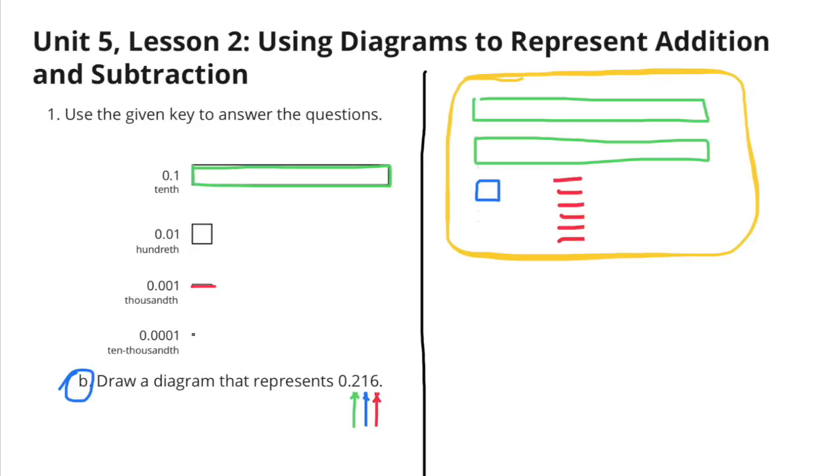B. Draw a diagram that represents 216 thousandths. I've drawn two of the longer shapes that represent 1 tenths each, so that would be 2 tenths. I've drawn one of the square shapes that represents 1 hundredths, and I've drawn six of the dashes. Each of those dashes represents 1 thousandths. The six of them equal 6 thousandths. Together, all these shapes represent 216 thousandths.